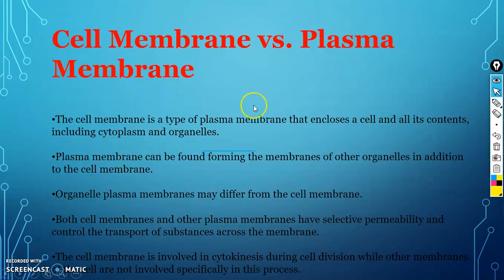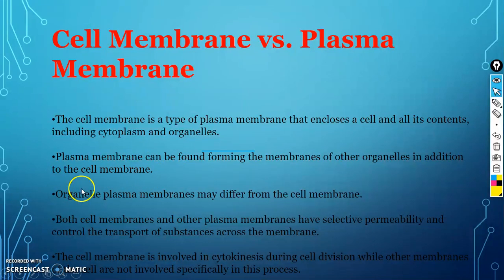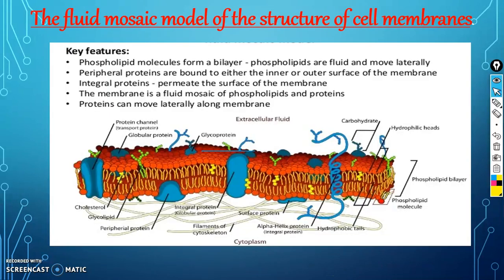How does the cell membrane differ from the plasma membrane? The cell membrane is a type of plasma membrane that encloses a cell and all its contents including cytoplasm and organelles such as endoplasmic reticulum, mitochondria, and nucleus. The plasma membrane can also form the membrane of other organelles in addition to the cell membrane. Both share selective permeability and control transportation. The cell membrane is involved in cytokinesis — the process of cytoplasm division during cell division — while other organelle membranes are not specifically involved in this process.